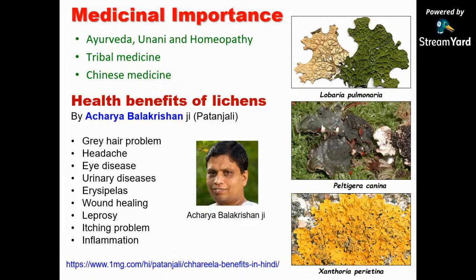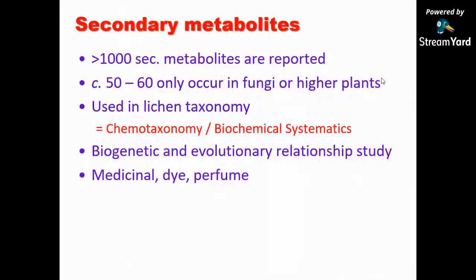Why are lichens medicinally important? Because they produce more than 1,000 secondary metabolites, most of which are unique to lichens — only 50 to 60 are found in other groups of organisms. These secondary metabolites are useful as medicines. Biological activities include antimicrobial, antioxidant, anti-inflammatory, anticancer, hepatoprotective (liver disorders), cardiovascular, and antidiabetic activities. Extracts and purified compounds from lichens have shown a lot of these activities.